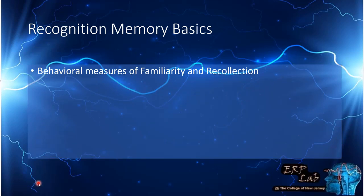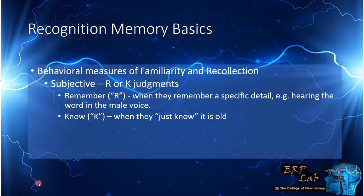We can also measure familiarity and recollection through subjective ratings, the so-called Remember-Know judgments. When people remember a specific detail about the study experience — for example, hearing a word in a male voice — they give it an R response, signaling recollection. On the other hand, if they just know it was old, that sense of familiarity without specific recollection, they give it a K response. So R judgments map onto recollection and K judgments map onto familiarity.